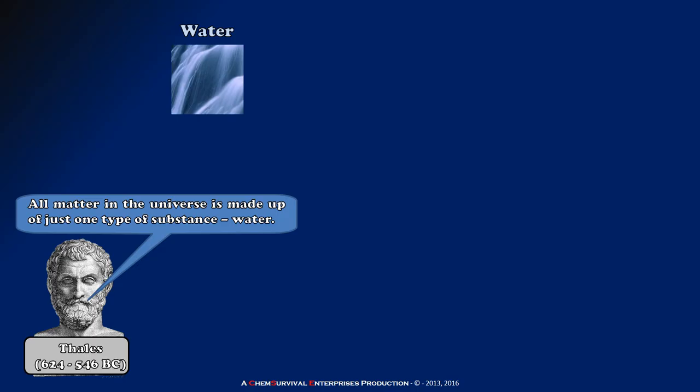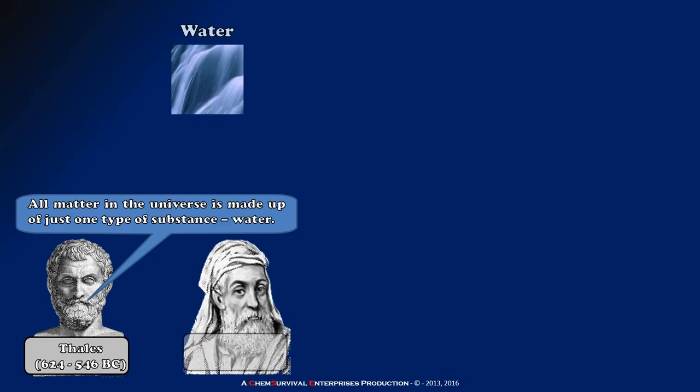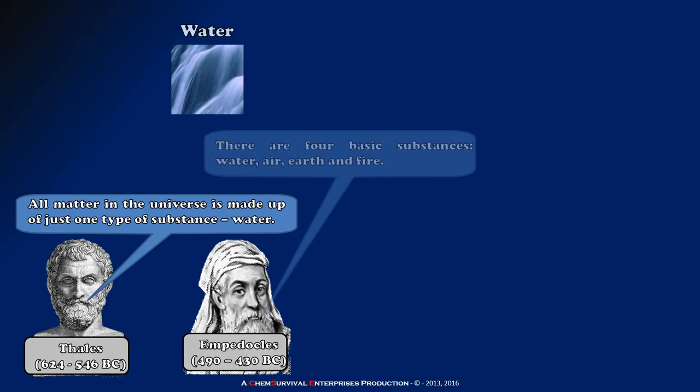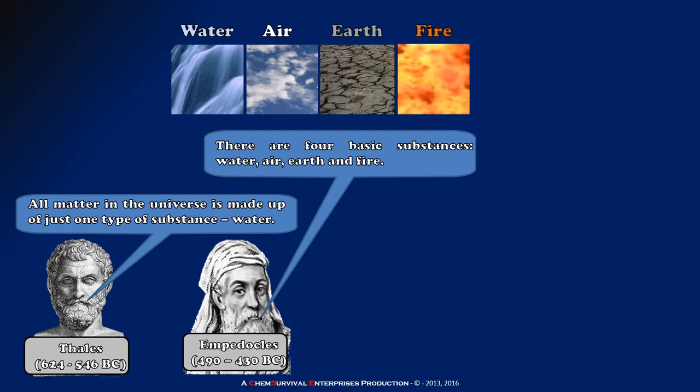But Thales' ideas lost popularity after a few centuries when the Greek philosopher Empedocles postulated that there were actually four elements, including water, but also air, earth, and fire. He proposed that it was these four fundamental substances combined in various ratios that formed all the materials around us. And that, just as these substances themselves are mixed in all other materials, so were their properties partially retained by the new materials that they comprised.